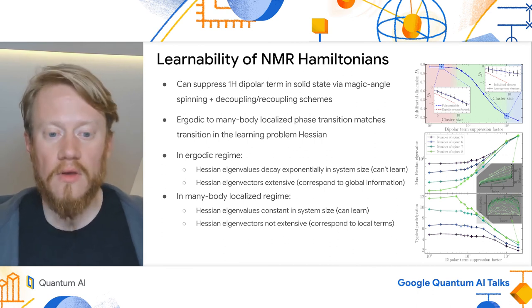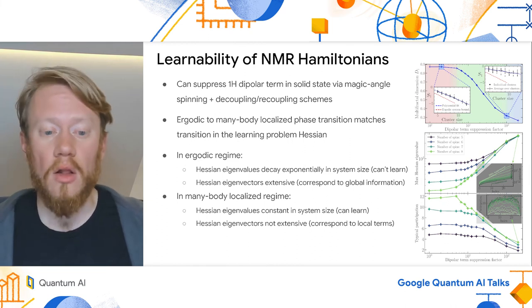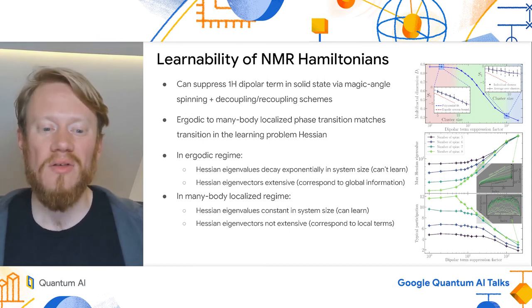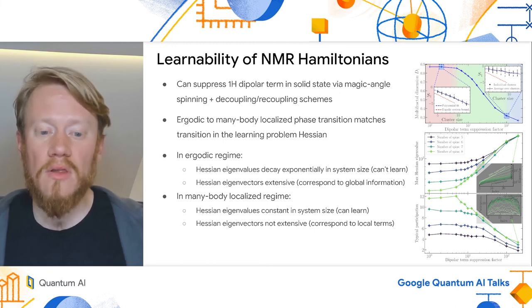To see this onset of learnability, we visualize the eigenvectors and eigenvalues of the Hessian itself. The eigenvectors here correspond to linear combinations of Hamiltonian parameters that are relatively easy or hard to learn, and the eigenvalues are proportional themselves to the rate at which these would be learned. As you can see, in the ergodic regime, these rates decrease exponentially in the system size.